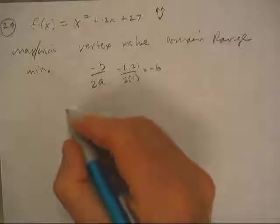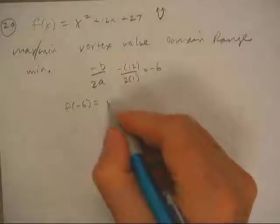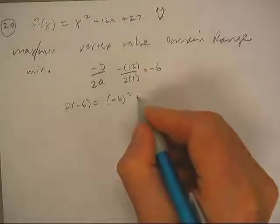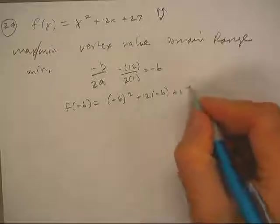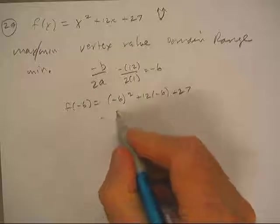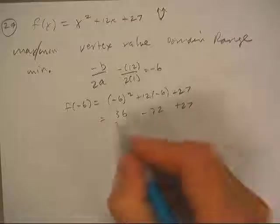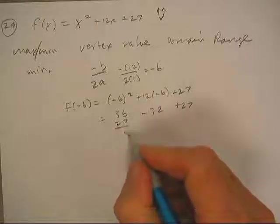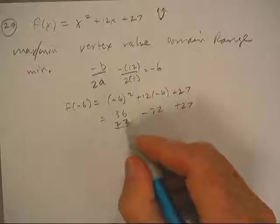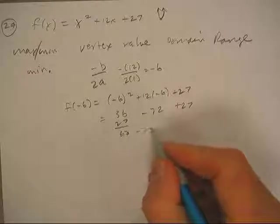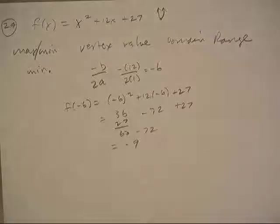So then I need f of negative 6. Negative 6 squared plus 12 times negative 6 plus 27. Well that's 36, that's negative 72. 5, 6, 63 minus 72, that's going to be negative 9.